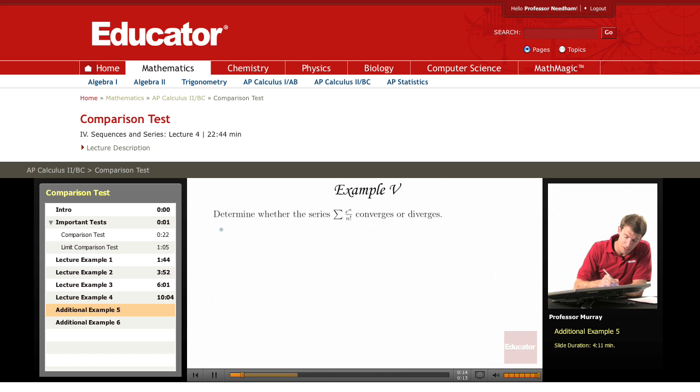I want to write that as e to the n over, I'm just going to expand out n factorial: 1 times 2 times 3 times 4 up to n.